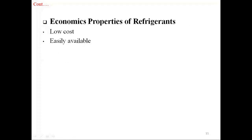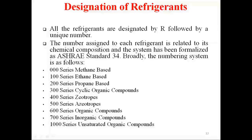Economic properties of refrigerants: refrigerants must have low cost and be easily available. Next is designation of refrigerants. All refrigerants are designated by R followed by a unique number. The number assigned to each refrigerant is related to its chemical composition, and the system has been formalized as ASHRAE (American Society of Heating, Refrigerating and Air Conditioning Engineering) Standard 34. Broadly, the number system is as follows.